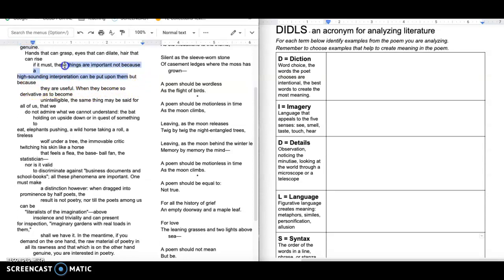Then she says these things are important, not because a high sounding interpretation can be put upon them. But so let's just talk about this for a minute. She's talking about these things. What things? Hands that can grasp. Eyes that can dilate. Hair that can rise. Those are all actually rather ordinary occurrences.